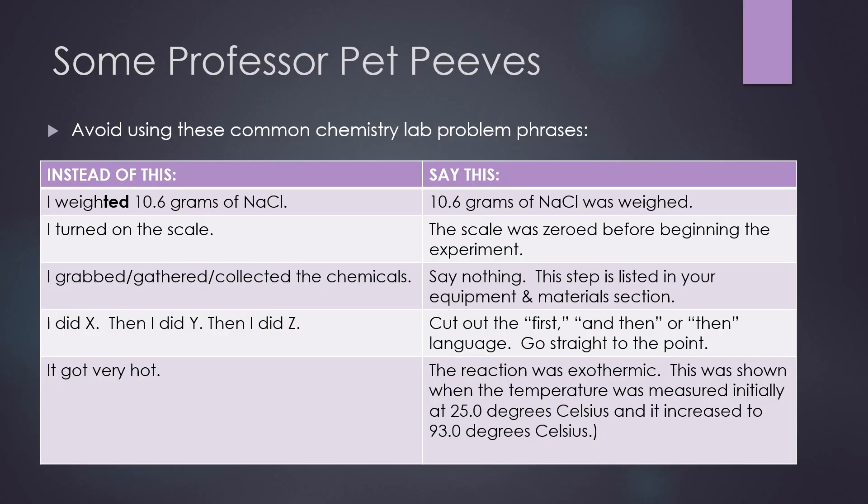Let's pause here to discuss some chemistry professor pet peeves in lab reports. Here are some common chemistry lab problem phrases that you should read through your lab reports and try to avoid using. I put it in a chart. Don't say the things that are on the left-hand column. Instead, try something similar to what's on the right-hand column. For example, you don't want to say, I weighed 10.6 grams of NaCl. Instead, you want to say, 10.6 grams of NaCl was weighed.